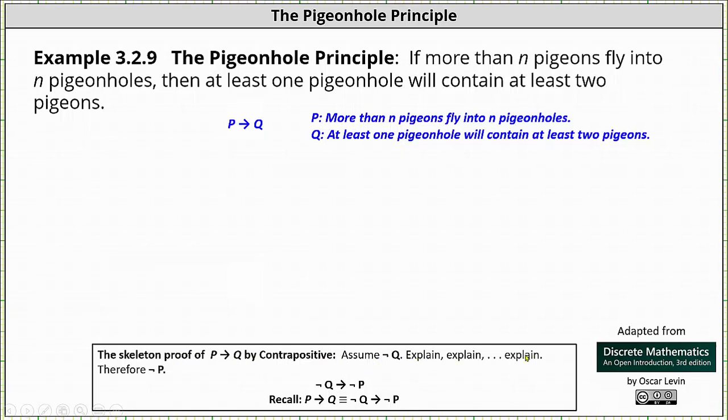explain, therefore not P. If the implication if not Q then not P is true, then the original implication of if P then Q is true because the two implications are logically equivalent.